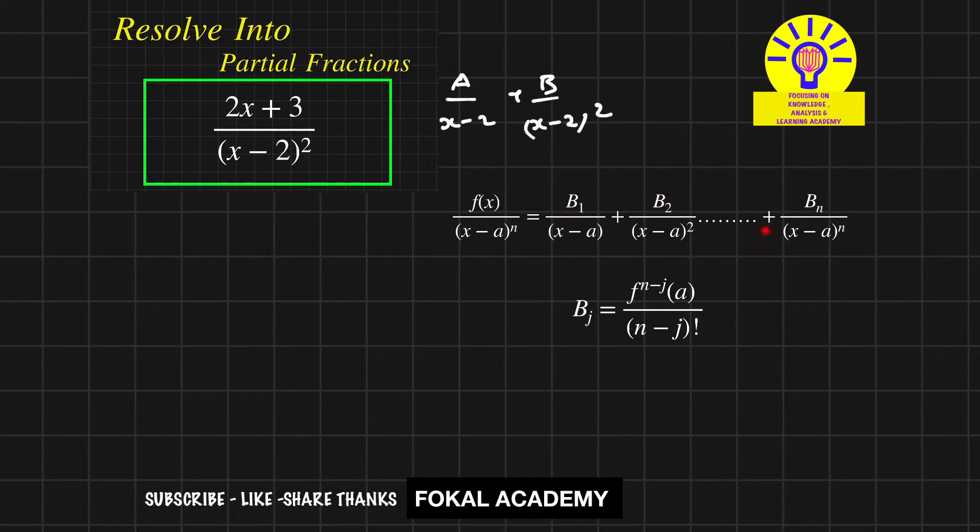B₁, B₂, Bₙ are constants - the first constant, second constant, and nth constant for the sequence. How can you find the constant values? We can find the Bⱼ constant value by using a simple formula for getting the constant values whenever there are repeated factors.